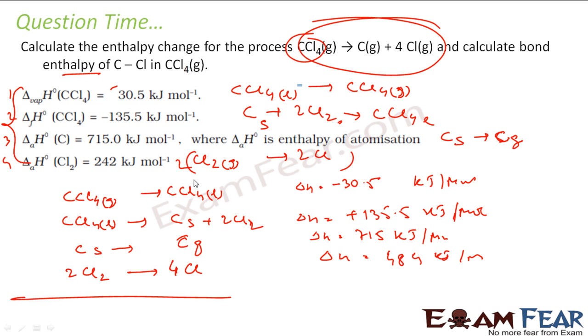So I will say 2 chlorine molecules gives 4 chlorine gas, and this delta H will be multiplied by 2, that is 484 kilojoule. So if you add these reactions, you see this gets gone, carbon solid is over, and this 2Cl2 is gone. So what I have left with is CCl4 gives carbon in gas form and chlorine atoms.